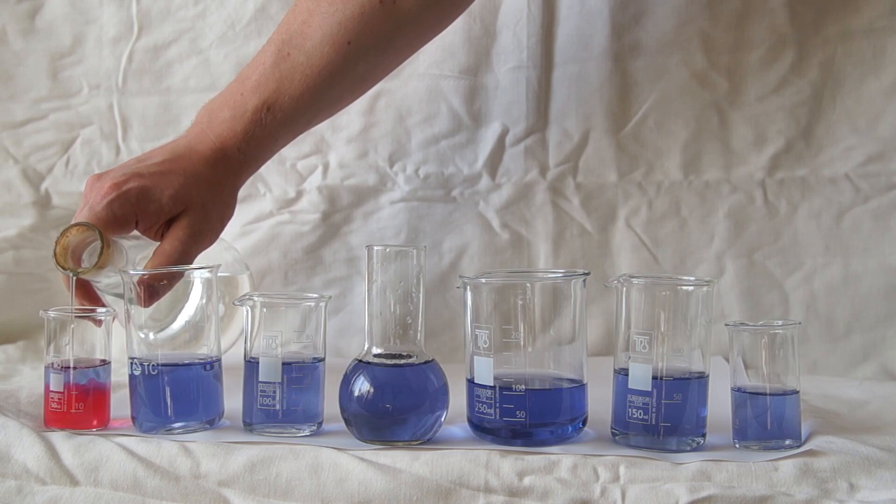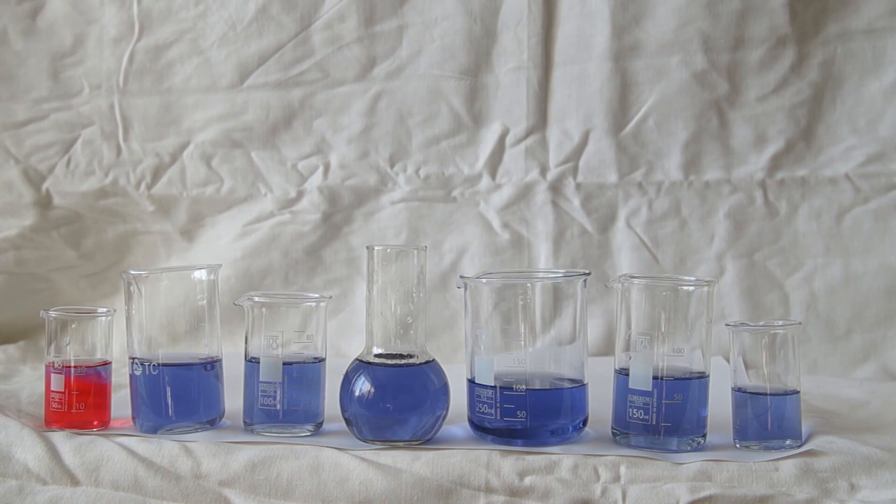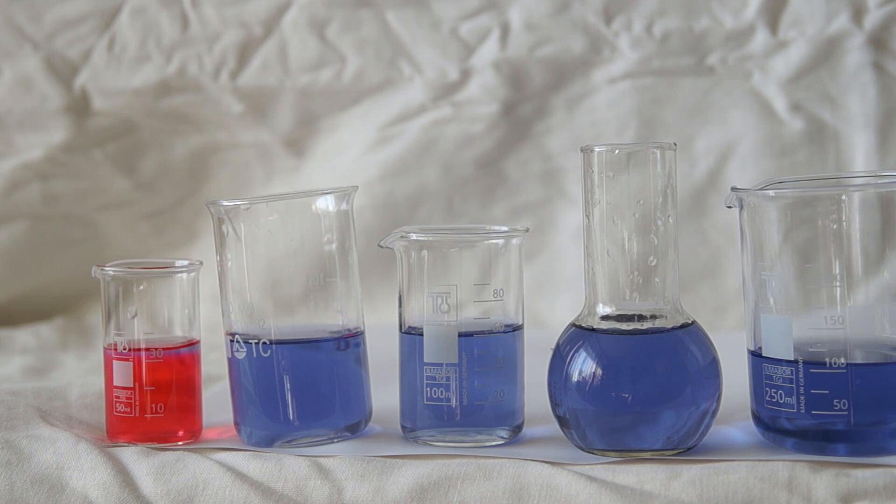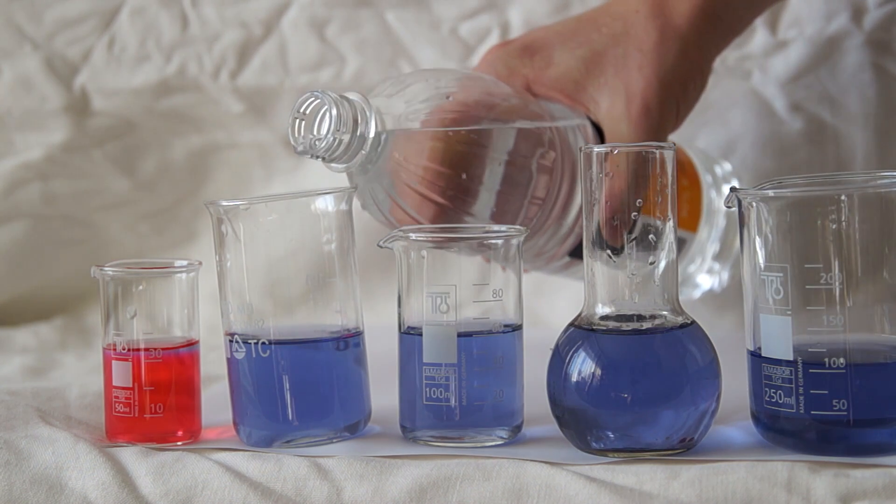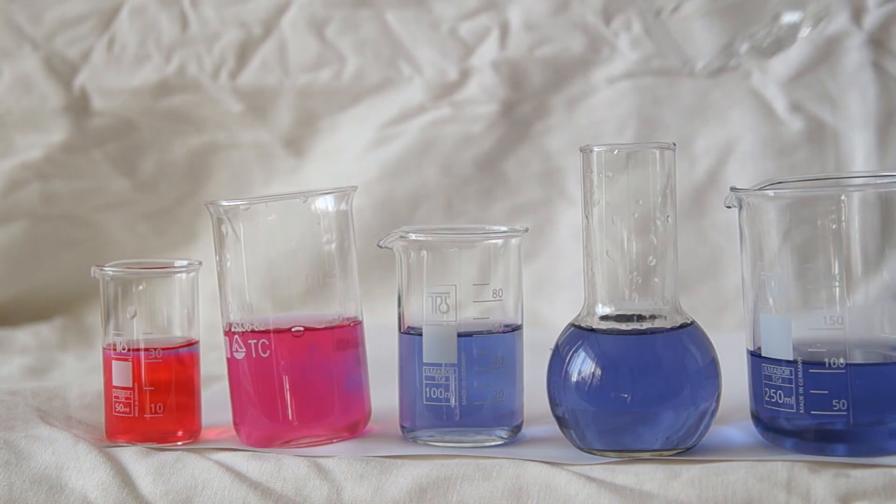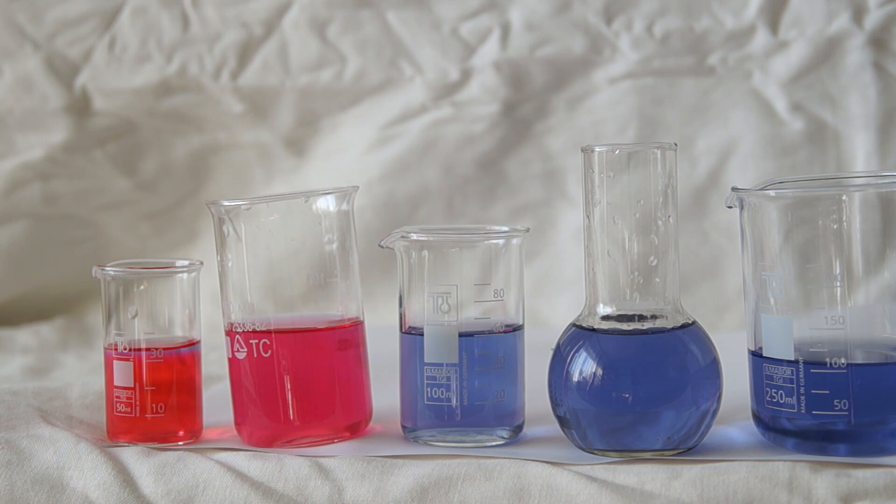I will pour sulfuric acid, a very strong acid, into the first beaker and the solution immediately becomes red, while the acidity of pH is equal to 1. I will add acetic acid to the second beaker. It is not as strong as sulfuric acid and the solution becomes bright pink.